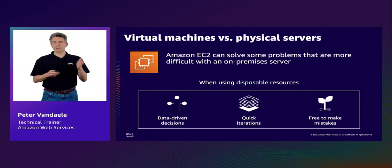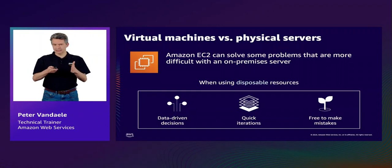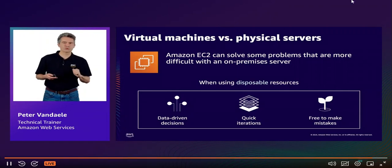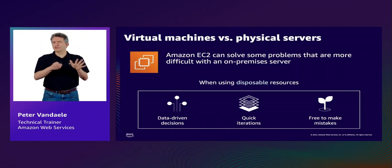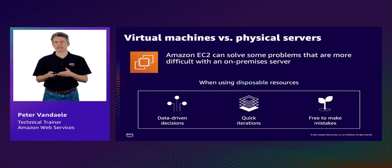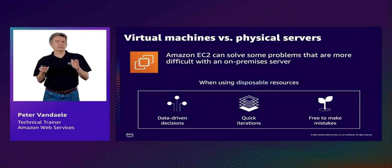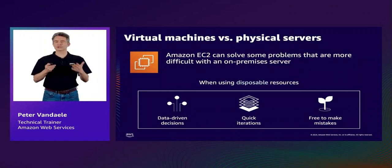For example, when we set up a workload in the cloud, there are certain data-driven decisions, like how many instances do we need. We can use data from our monitoring services to determine exactly how much compute we need. Consider a situation where you need a virtual machine just to prepare a proof of concept or POC. In an on-premise environment, if I purchased a server just for a POC and never touched it after that, my manager is probably not going to be very happy. EC2, on the other hand, is a great solution because you can run the resource for as long as you need it and terminate it at any point in time.